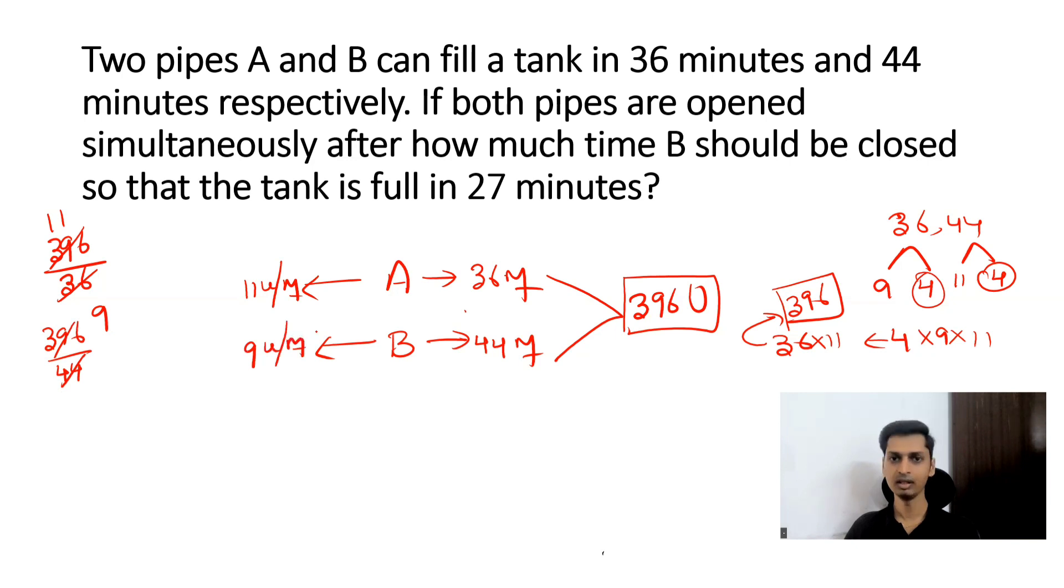Now if you read the question once again from second line, both the pipes are opened simultaneously. After how much time B should be closed so the tank is filled in 27 minutes. Now tank has to be filled in 27 minutes. For first some time pipe A and B worked, after that pipe B closed, then pipe A filled the remaining tank.